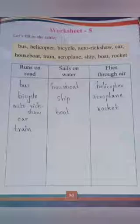Look here — in the box, some words are given. These are names of some vehicles: bus, helicopter, bicycle, auto rickshaw, car, houseboat, train, aeroplane, ship, boat, and rocket.